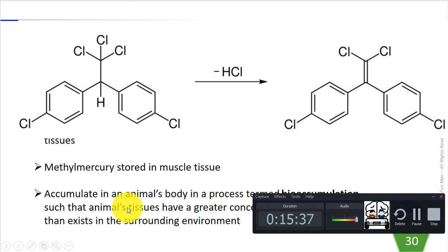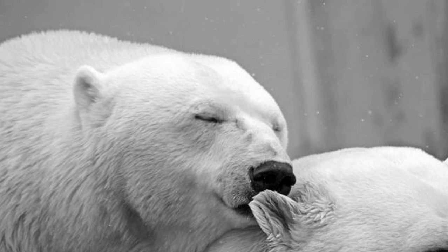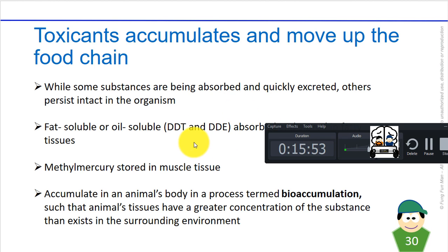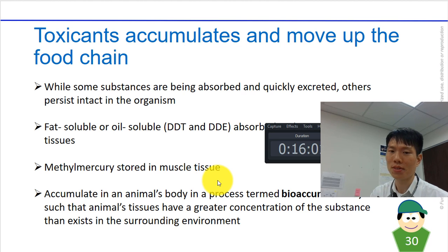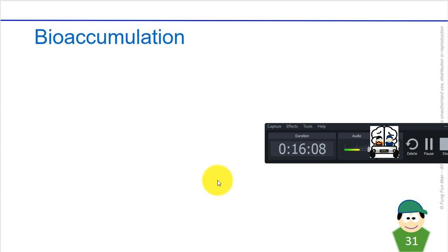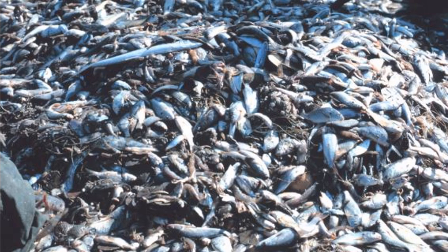These persistent toxicants may accumulate in an animal's body in a process called bioaccumulation, where biological toxicants gather over time and cause the animal's tissues to have a greater concentration of the substance than exists in the surrounding environment. The toxic substances that accumulate in organisms' tissues may then be transferred to other organisms.